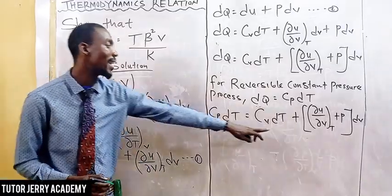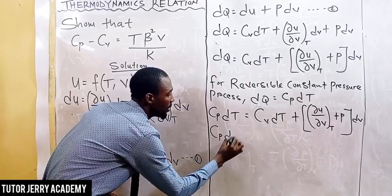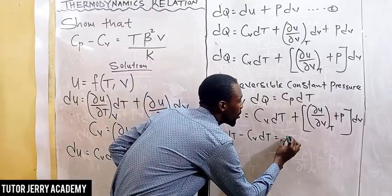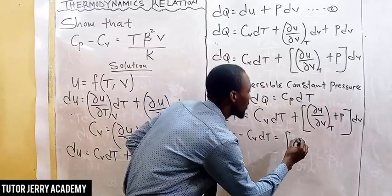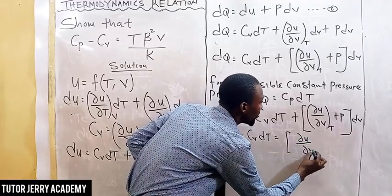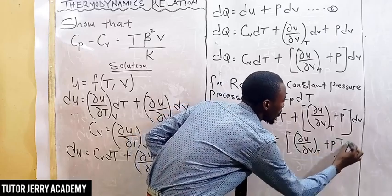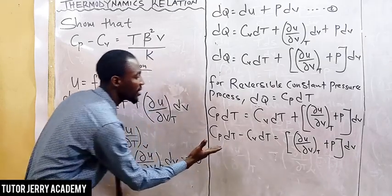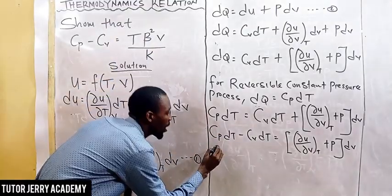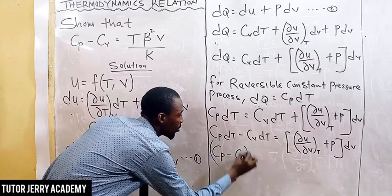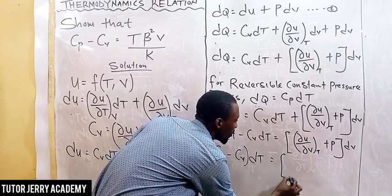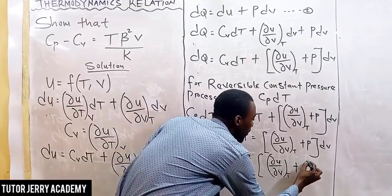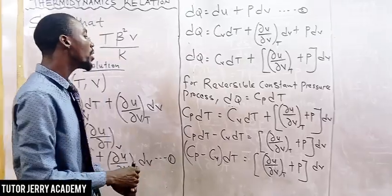Moving Cv dT to the other side, we have Cp dT minus Cv dT equals the partial derivative of u with respect to V, keeping T constant, plus P, times dV. We can factor out dT, so Cp minus Cv, times dT, equals the partial derivative of u with respect to V, keeping T constant, plus P, times dV.